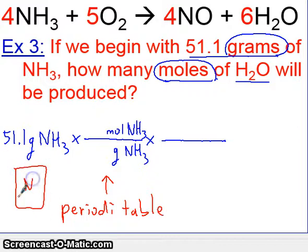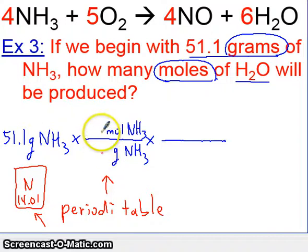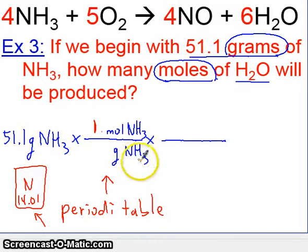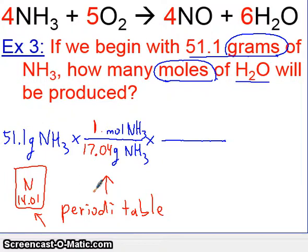Nitrogen, for example — that 14.01 is the molar mass, or the grams in a mole, and that's why we're using this number. Any time we go from grams to moles, one will always go for the moles, and the mass will come from the periodic table. In this case, you'll have to add up nitrogen and three hydrogens, and if you add those up, you should get 17.04 grams for your molar mass.